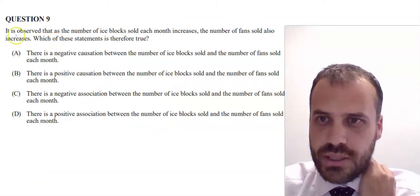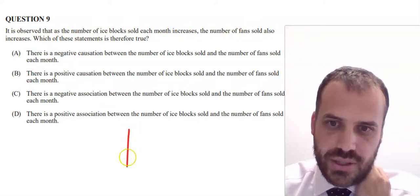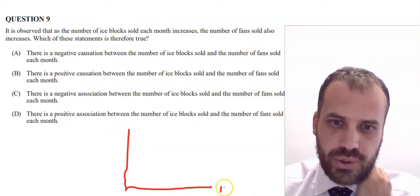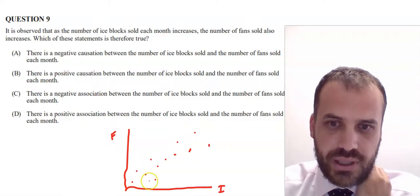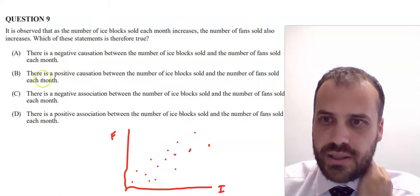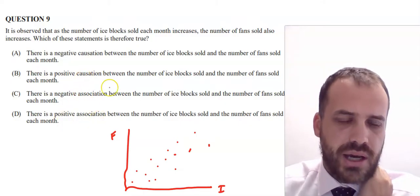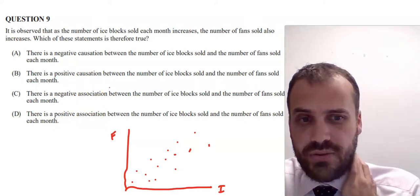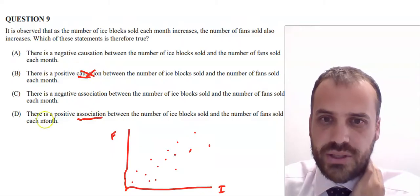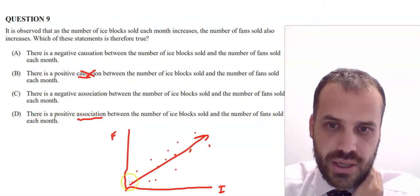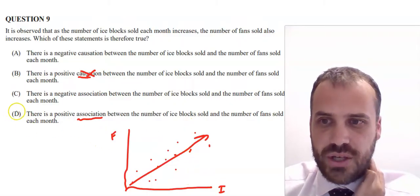Question nine: it is observed that as the number of ice blocks sold each month increases, the number of fans sold also increases. As one increases the other increases — a positive trend. But is it causation or association? Causation means one is causing the other — ice blocks are not causing fans to be sold. They're just associated. There is a positive association between ice blocks sold and fans sold. Answer: D.